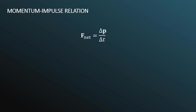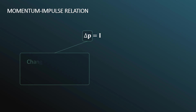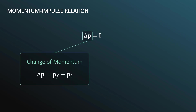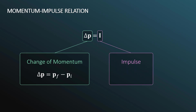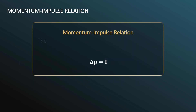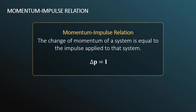Now we want to talk about the momentum-impulse relation, which stems from Newton's second law and the definition of momentum. We take Newton's second law as rewritten and manipulate it — multiply both sides by delta T. Now we have the change in momentum equals the net external force multiplied by the time interval over which that force is applied. We can call the right-hand side a capital I, which is the impulse. Impulse is defined as the net force multiplied by the time interval over which that net force is applied. The momentum-impulse relation says the change in momentum equals the impulse applied to that system.